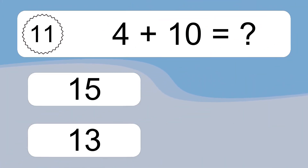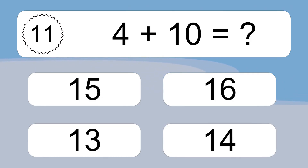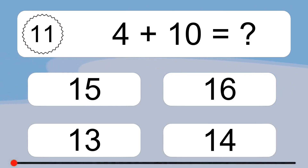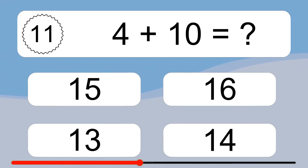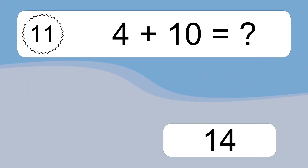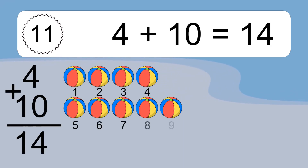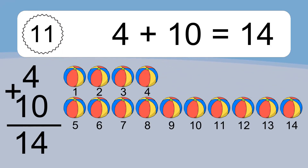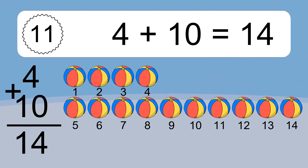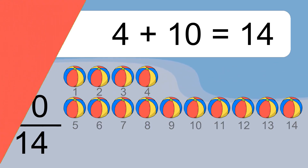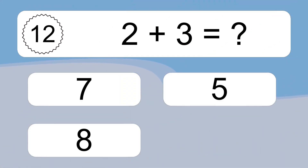4 plus 10 equals what? 4 plus 10 equals 14. Let's count it: 1, 2, 3, 4, 5, 6, 7, 8, 9, 10, 11, 12, 13, 14.